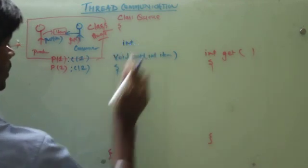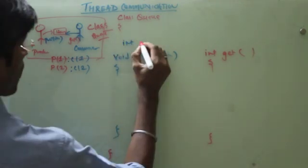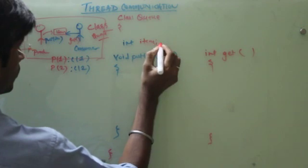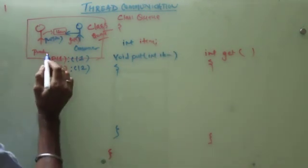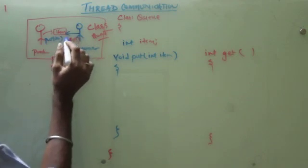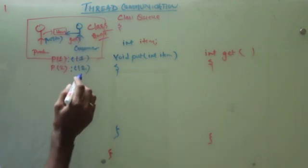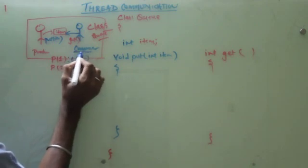What is item? It is our item. When producer put an item, for the consumer then it has to notify the consumer.